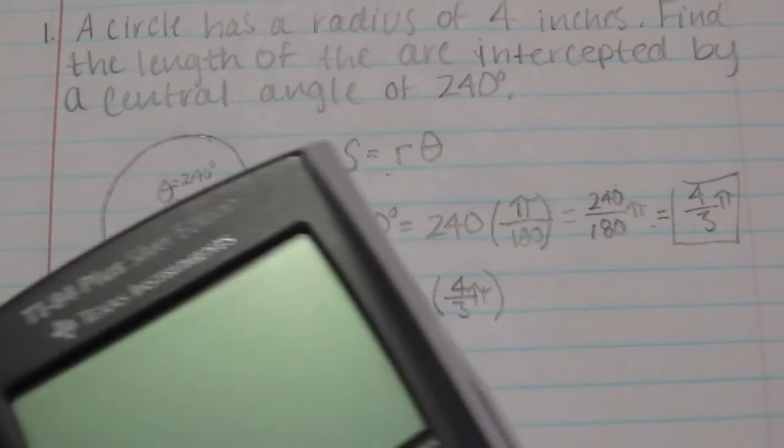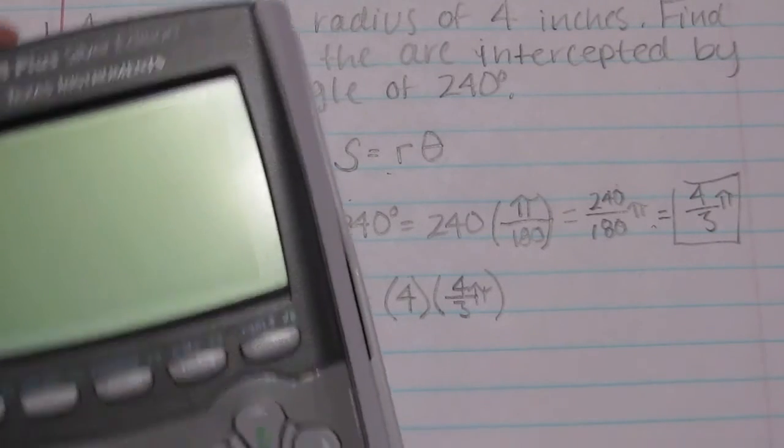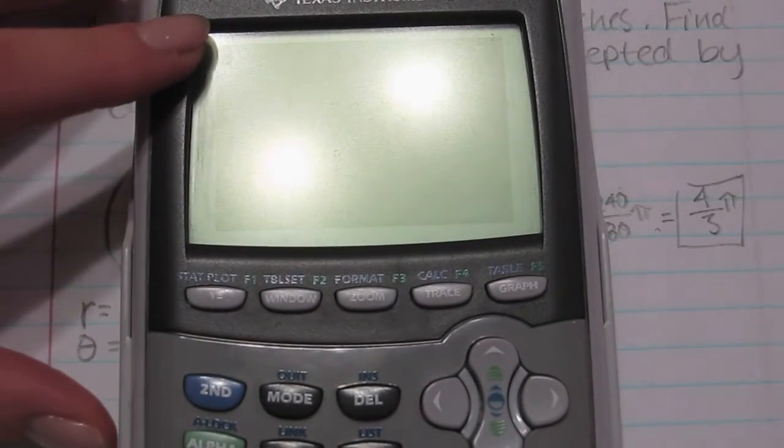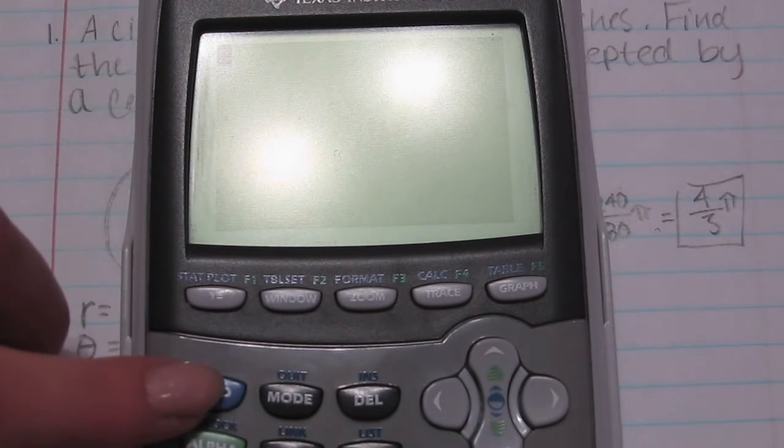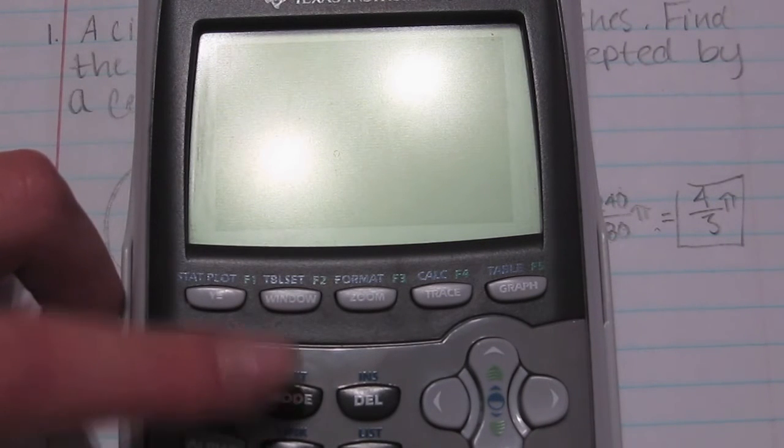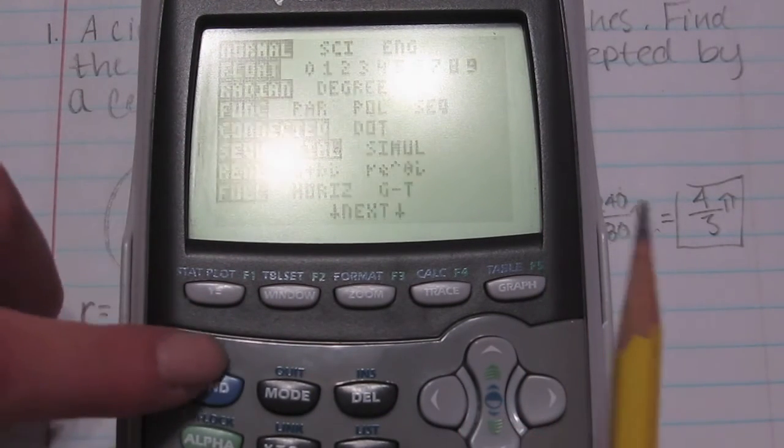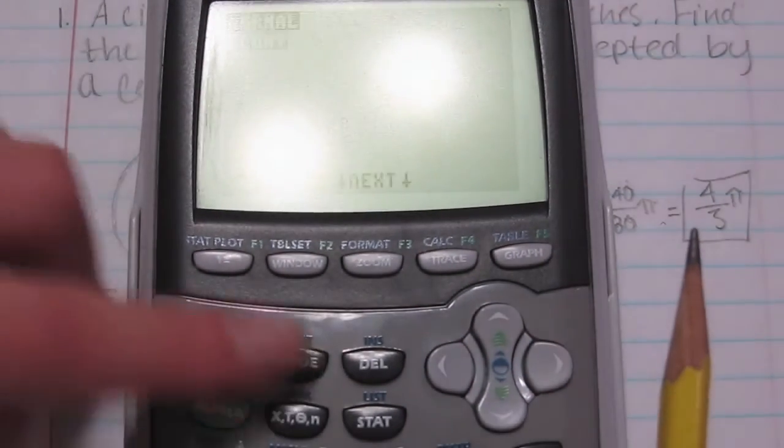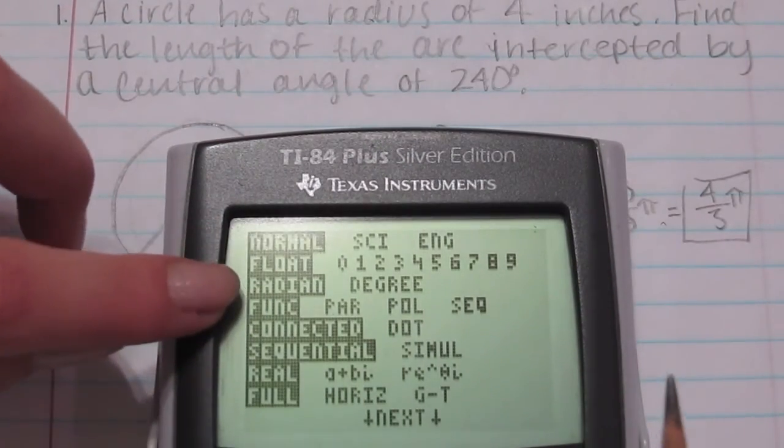And you need your calculator to find the estimation of it. In your calculator you want to make sure your mode is in radians. If you go to mode right here you hit it and you can see that radians is highlighted. So we're good.